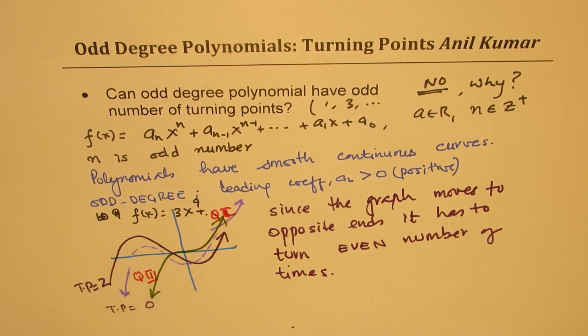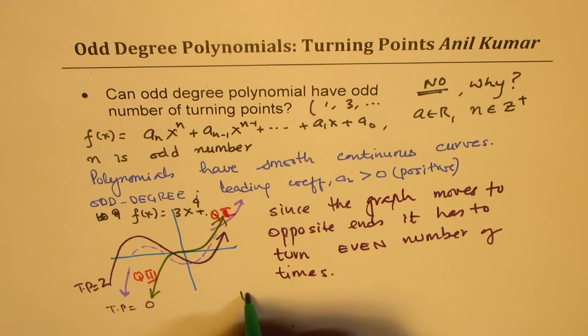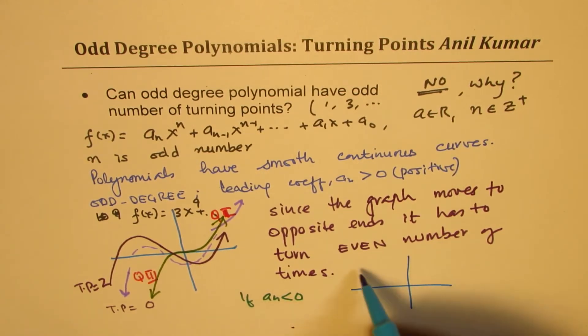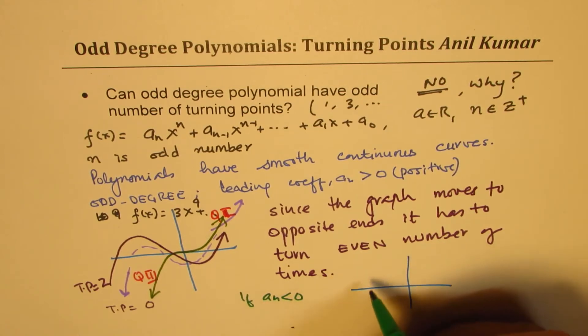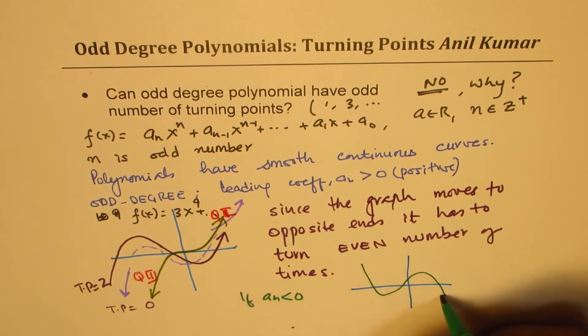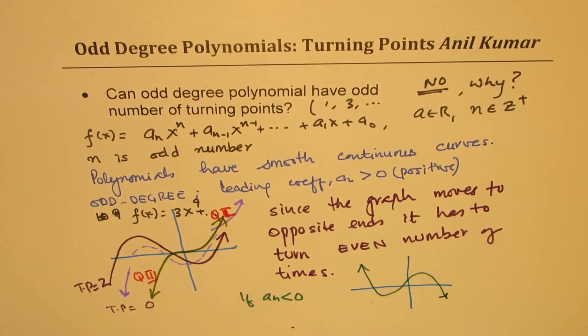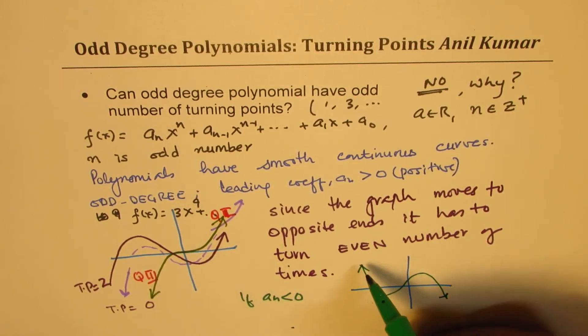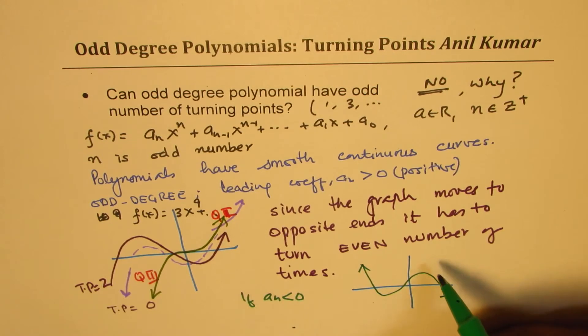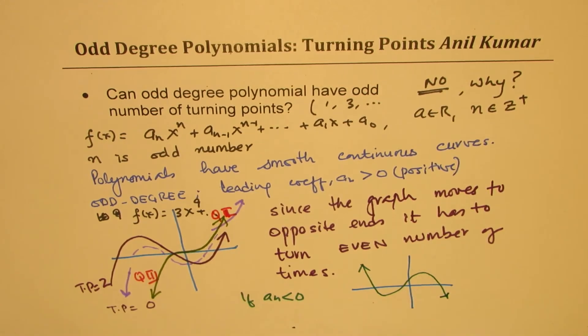So what we see here is, since the graph moves to opposite ends, it has to turn even number of times. Well, if the leading coefficient is less than 0, in that case, the only difference will be that the graph moves from quadrant 2 to quadrant 4. In that case, the turning points, as you can see, will always be even, it cannot be odd, because if it is odd, then it ends up on the same side, which is not possible for odd degree polynomial. So that explains why odd degree polynomial will always have the number of turning points as even.